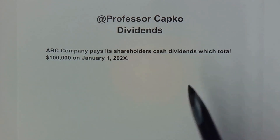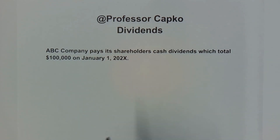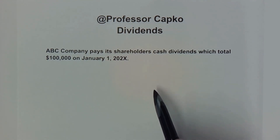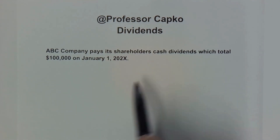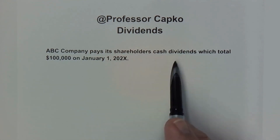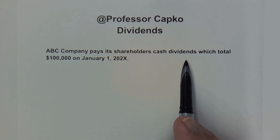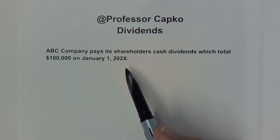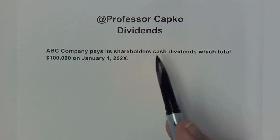But first I want to say I believe something wonderful is going to happen to you very soon, so be on the lookout for it. And now back to the video. In this transaction it says ABC company pays its shareholders cash dividends which total $100,000 on January 1st of 2020X.